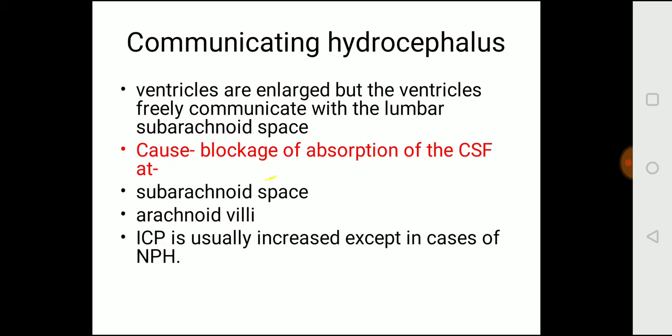The causes of blockage of absorption are at two places: subarachnoid space and arachnoid villi. When CSF comes out of the ventricles, it goes to the subarachnoid space — if that is blocked, CSF cannot be absorbed. Arachnoid villi absorbs the CSF; if damaged, CSF amount increases and dilates the ventricles. ICP usually increases except in the case of NPH.